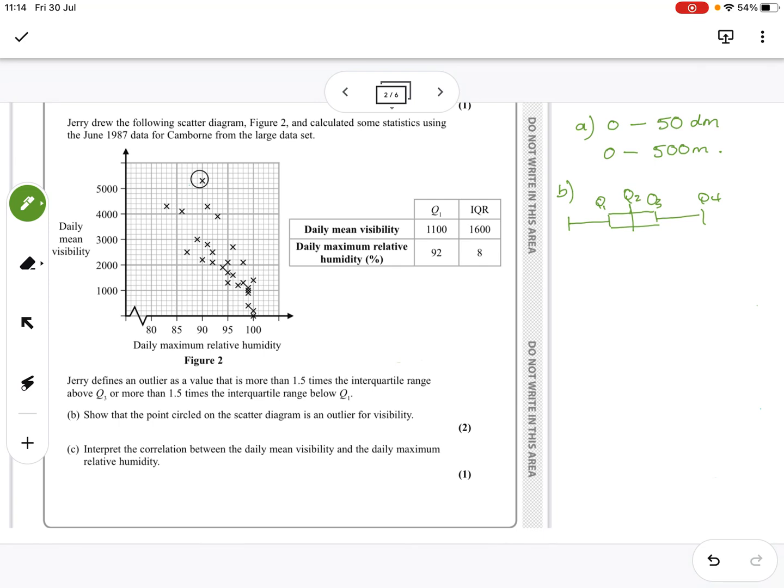So Q1 here is 1100 and the interquartile range is 1600, which makes this 2700 at the top, because they haven't given you Q3.